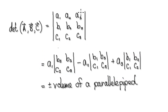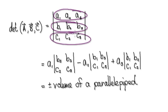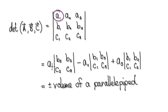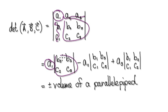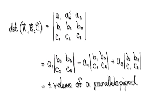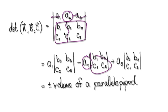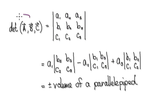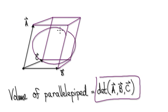So as a reminder, to work out the determinant of three vectors, it would be one vector, another vector, and another vector. Your eyes go to a1, discard, discard, looking at these four, and then take away a2, discard, discard, and looking at these four, and so on. So we've seen this in the past. Computing the determinant would then give you the volume.